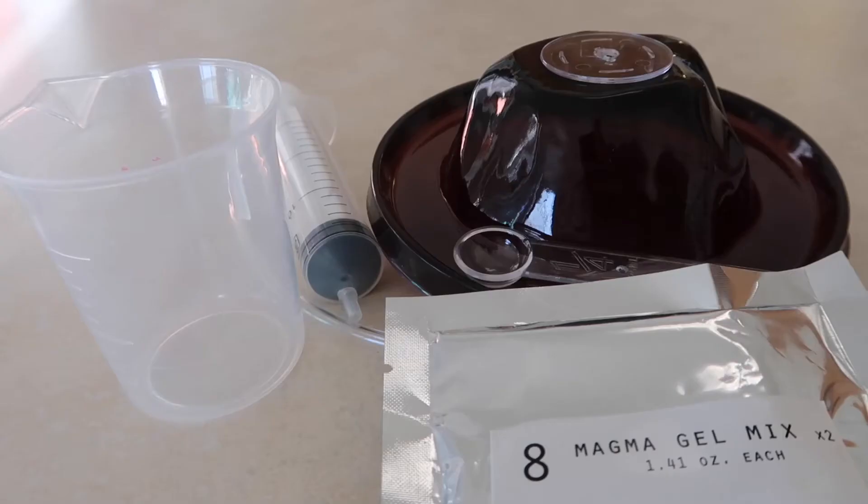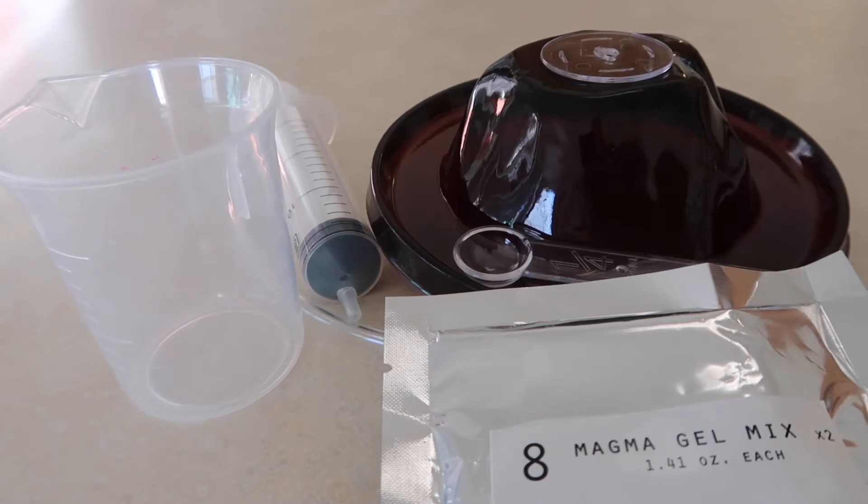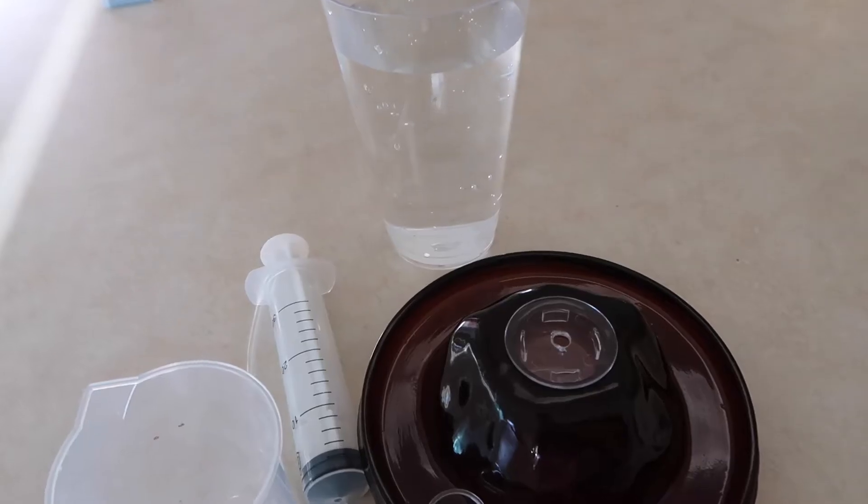Ingredients needed from kit: Packet 8, which is your magma gel. You'll need 5 to 6 scoops. Ingredients needed from home: water.